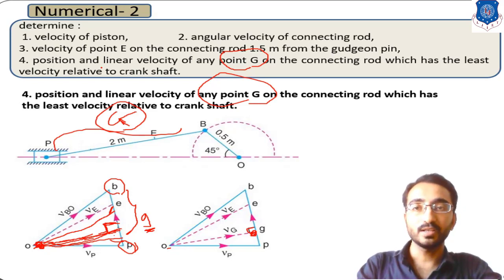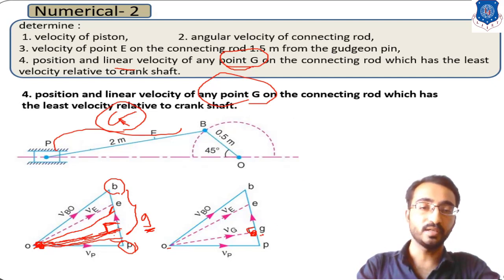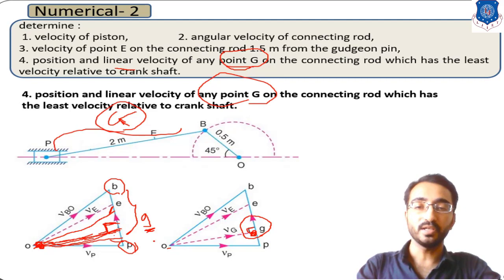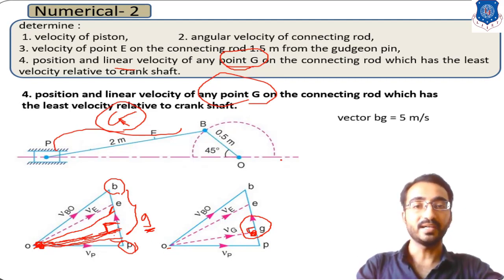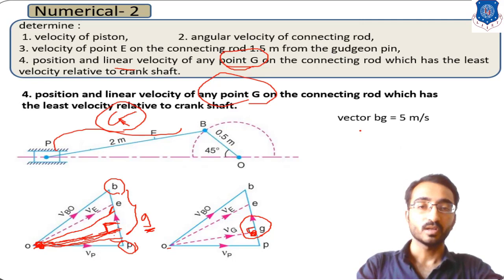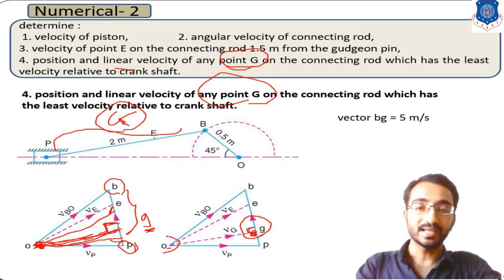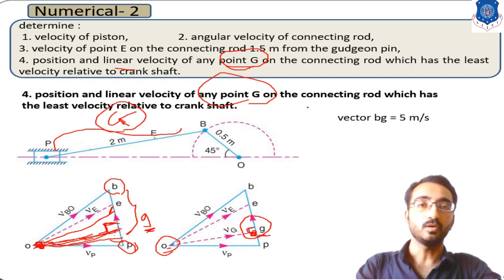Now we calculate the linear velocity of point G. To get the linear velocity we use vector OG — the line joining O to G on the velocity diagram — which gives the absolute velocity of point G.